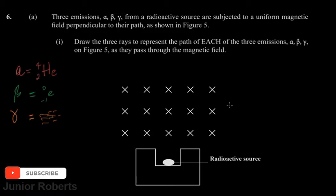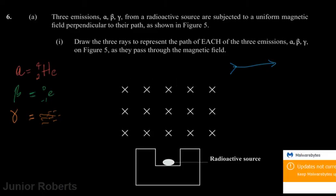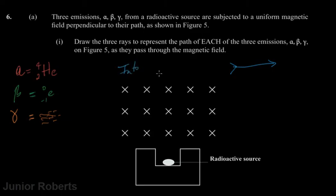Looking at this illustration, we have a uniform magnetic field that is going into the page. The reason we say it's going into the page: if we take an arrow with a tip and a tail, and this arrow was going into the page, what we would see is the tail of the arrow, which looks like an X. So the X symbols represent the magnetic field going into the page.